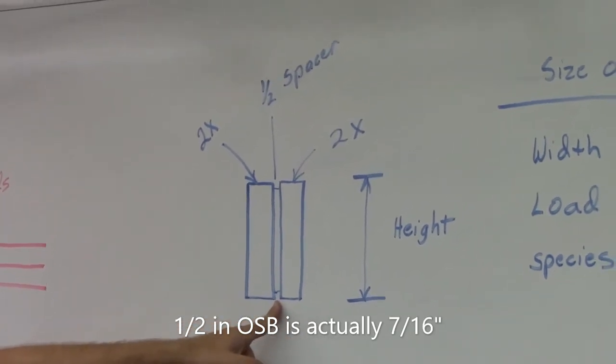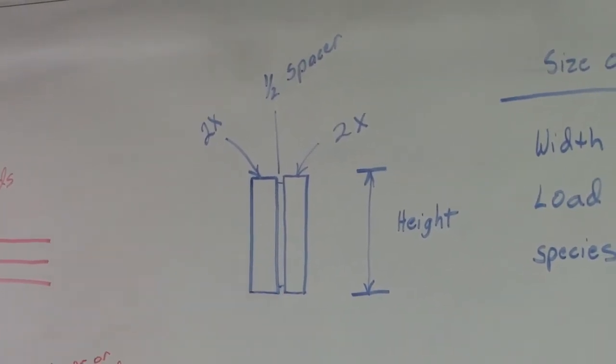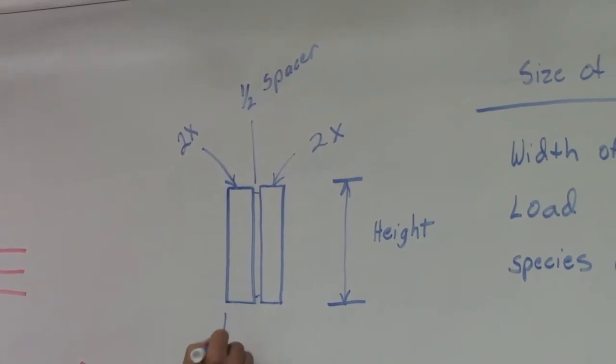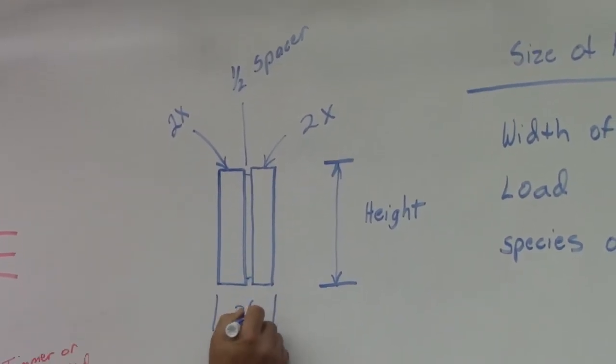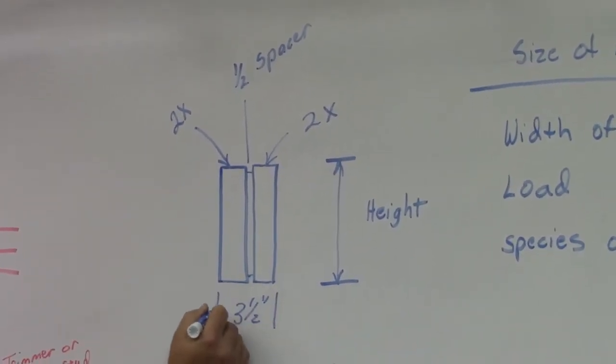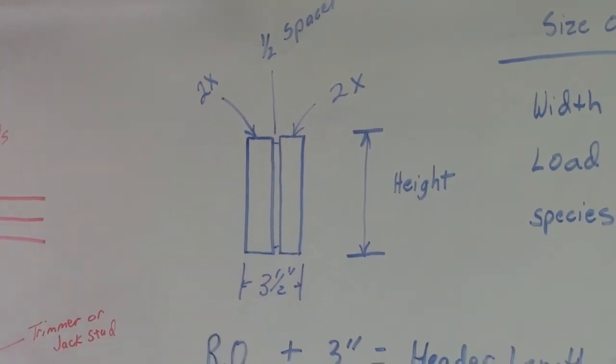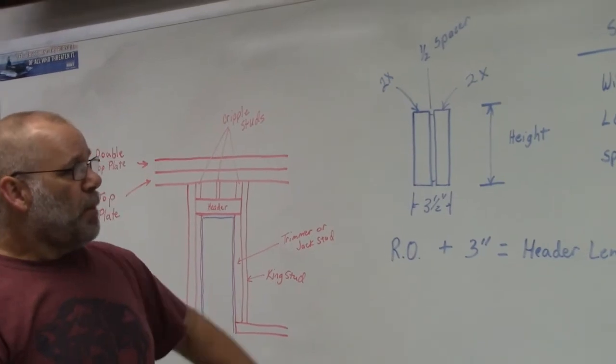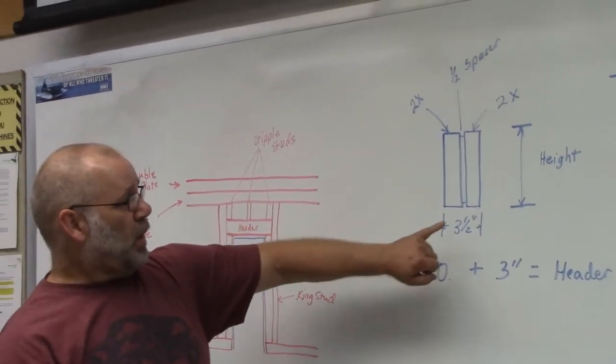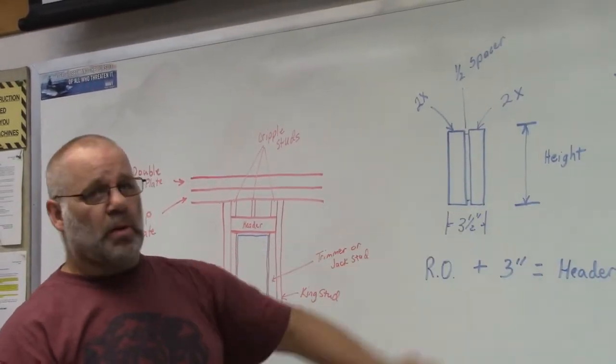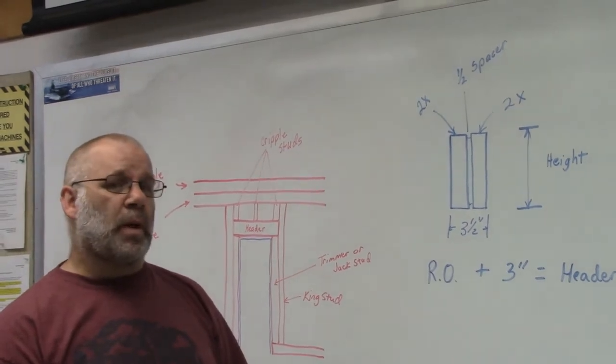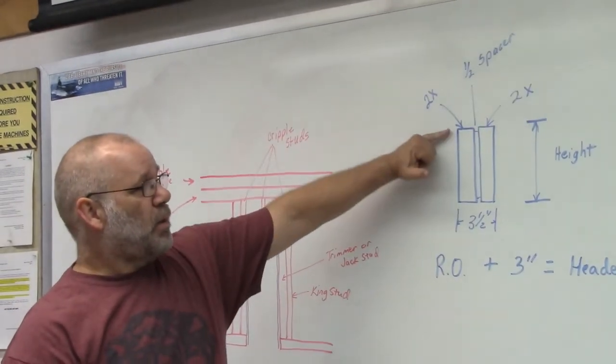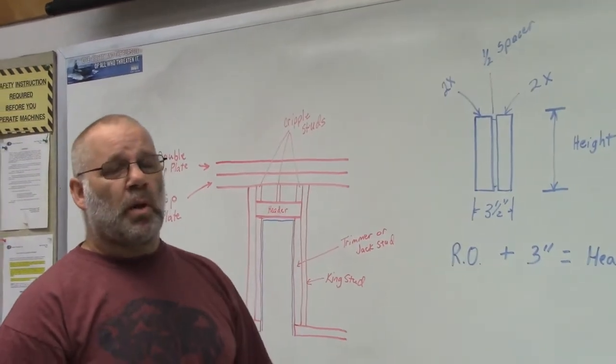This will give you a total of three and a half inches, which is the width of a two-by-four. One of the things I like to do is when I cut the spacer, I cut the spacer a quarter of an inch less than the width of these boards so that